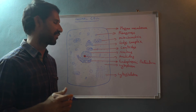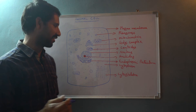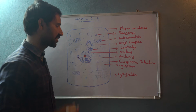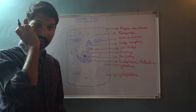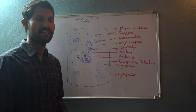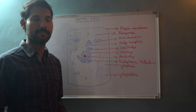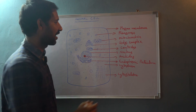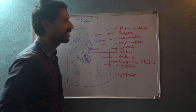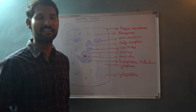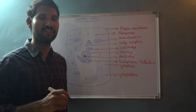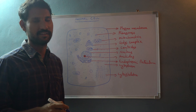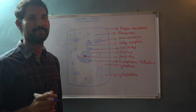The cytoskeleton gives mechanical support to the animal cell. Centrioles are also present and are involved in the process of cell division.